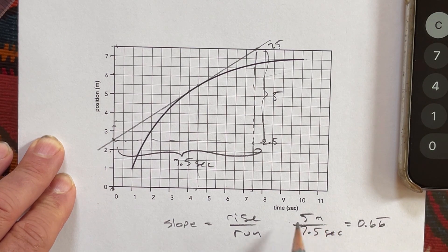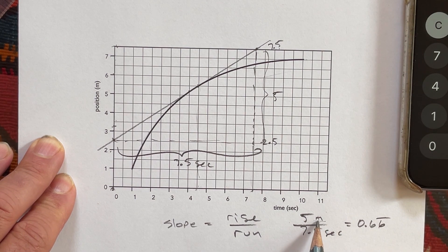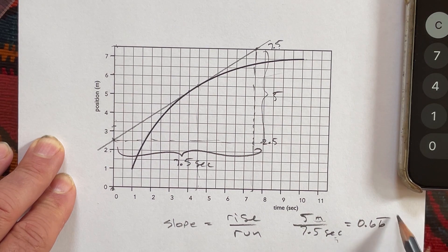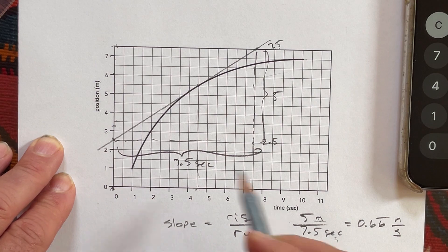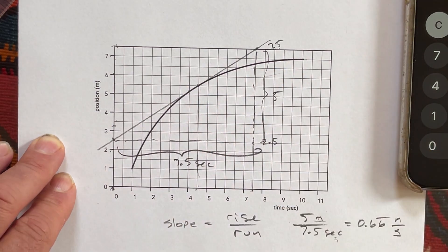And the units are going to be the units we have here. The rise is in meters, the run is in seconds. So the units are going to be meters per second. That's how you find the slope. And you can do that at any one of the points along this line.